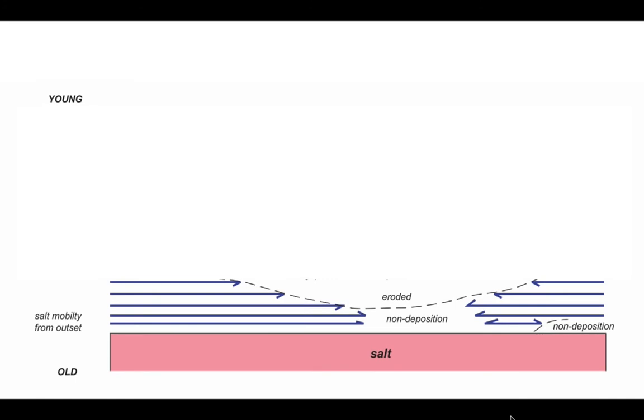Let's consider the lower part of the section where we have erosion of some of these mauve units, implying bulging and uplift of the salt creating a high that can get planed off.